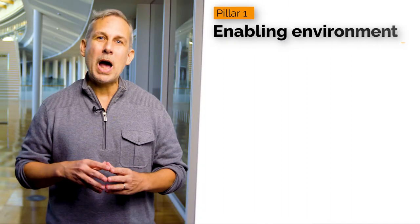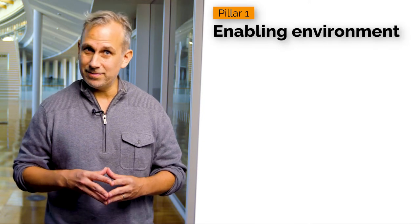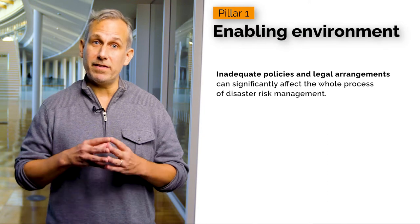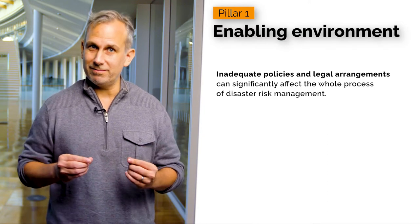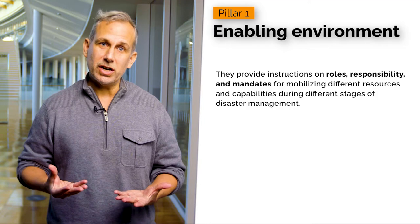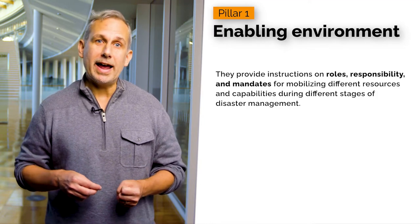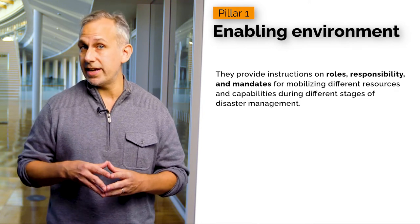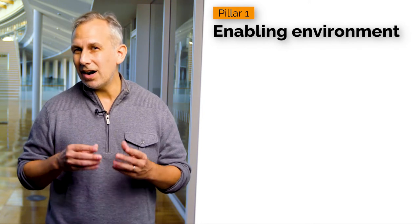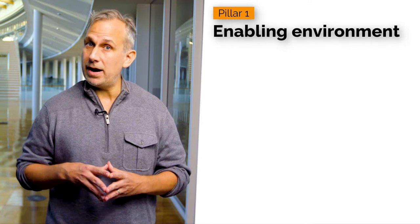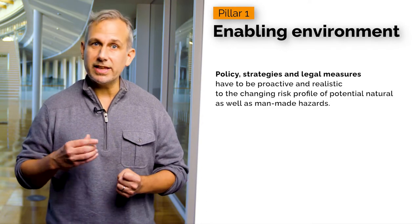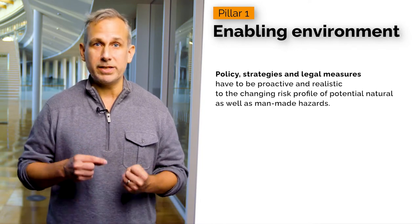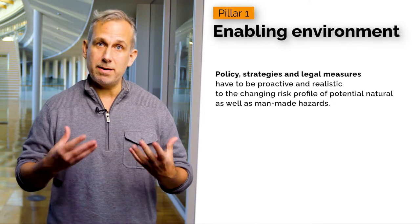Pillar one: policy, legal, and institutional setup. Inadequate policies and legal arrangements can significantly affect the whole process of disaster risk management. They provide instructions on roles, responsibilities, and mandates for mobilizing different resources and capabilities during different stages of disaster management. In the context of cascading and compound disasters, policies, strategies, and legal measures have to be proactive and realistic to the changing risk profile of potential natural as well as man-made disasters.